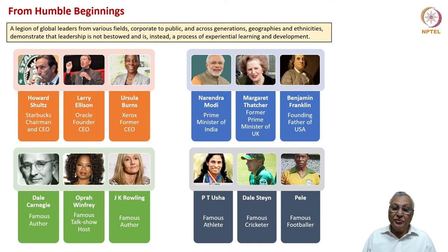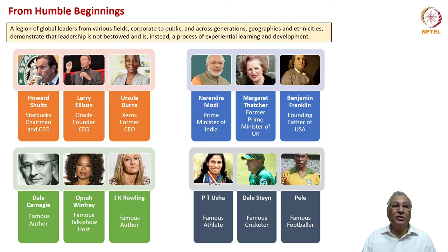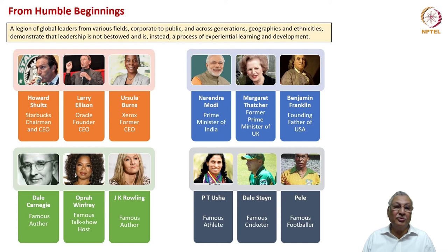In the field of sports: P.T. Usha, the famous athlete, was a frontline employee in the railways department. Cricketer Dale Steyn also came from normal origins, and Pelé, the iconic footballer, also had very humble beginnings. Whether we look at corporate, education and authorship, politics or sports — in all four domains — humble beginnings were never a constraint for people to rise to the highest excellence possible in their respective fields. That is the lesson we need to carry with us as we encounter hurdles on the path of leadership.